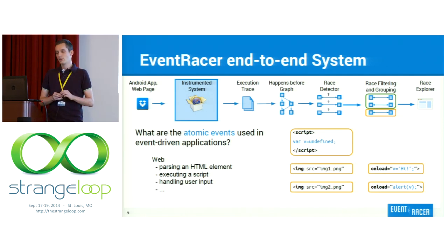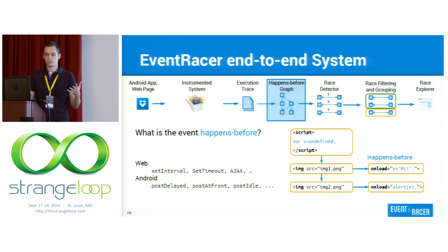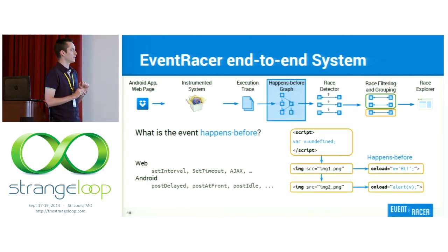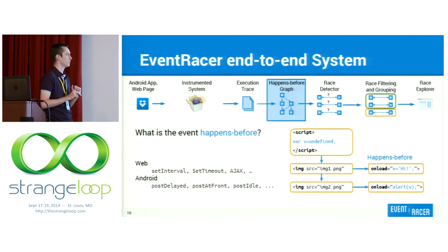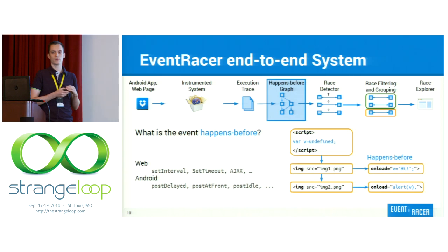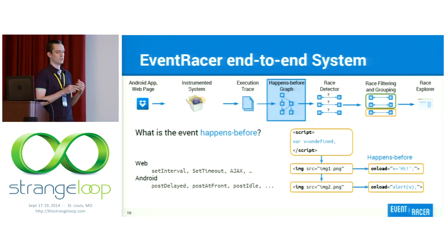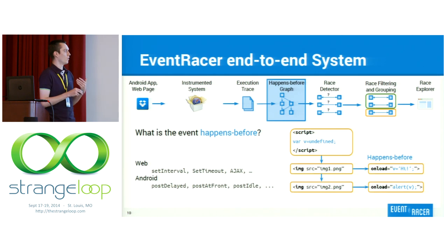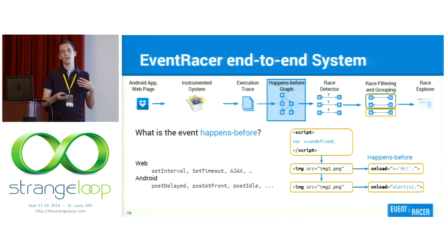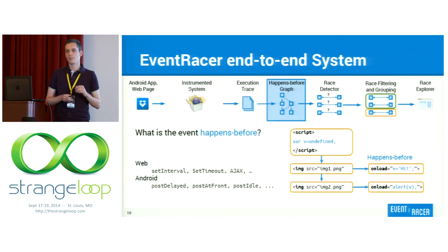Once we have these two things, we run the application. Once we get the trace, we want to look at all the events and define the ordering between them. This can be a tricky part because you have all these asynchronous APIs — set interval, set timeout — which constrain what the ordering is. This is even more of an issue in Android, where the set of APIs is very rich. In your main application there is a message queue which dispatches events, and you can say: I want to post this message with some delay, or post it at the front of the queue, or execute it only when the queue has nothing to do. You want to capture all these constraints to make this ordering precise.